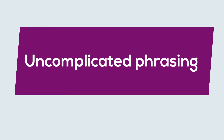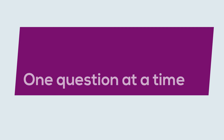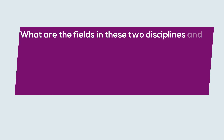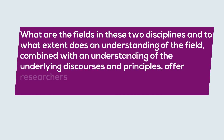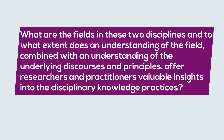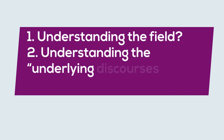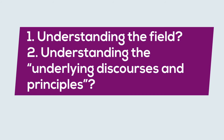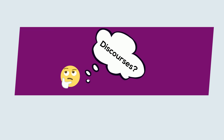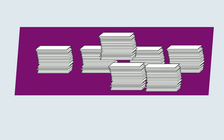Another thing to consider is phrasing. You want your research questions to be short, focused, and conceptually clear. This means using, as far as possible, less jargon, uncomplicated phrasing, and asking one question at a time. Consider this example: 'What are the fields in these two disciplines and to what extent does an understanding of the field, combined with an understanding of the underlying discourses and principles, offer researchers and practitioners valuable insights into disciplinary knowledge practices?' There are a few things wrong with this question, but perhaps the most glaring issue is that this is actually two questions. Understanding the field and understanding the underlying discourses and principles are two different things. Additionally, the terms 'discourses,' 'principles,' and 'disciplinary knowledge practices' are unclear. There is too much going on here — this is a bad research question.